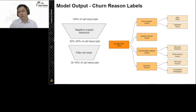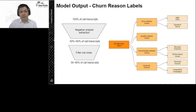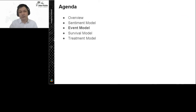Coverage-wise, after the negative snippet extraction and after filtering out noise, we have seen about 30% to 40% coverage — which is pretty good. Some of the common category labels we've seen include price-related issues like high prices or payment terms. Now let's jump into the next model: the event model.